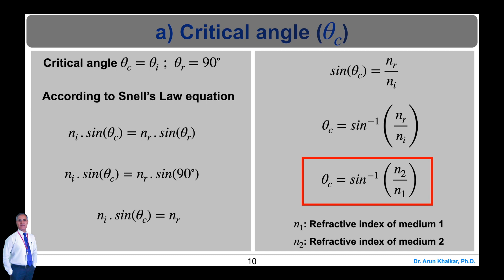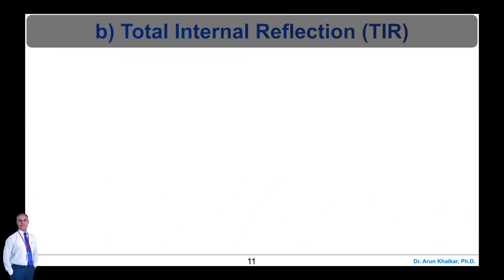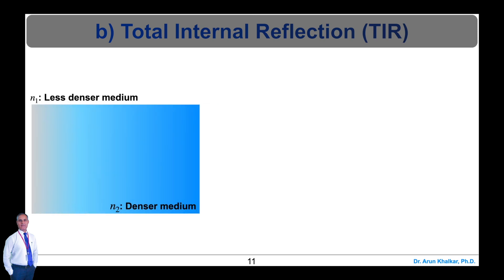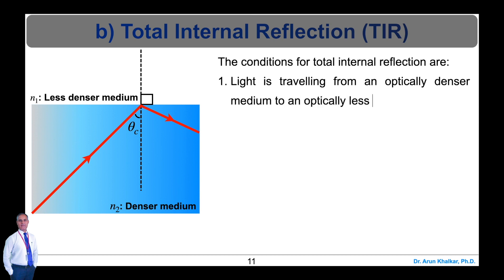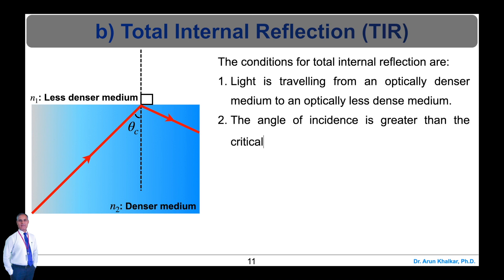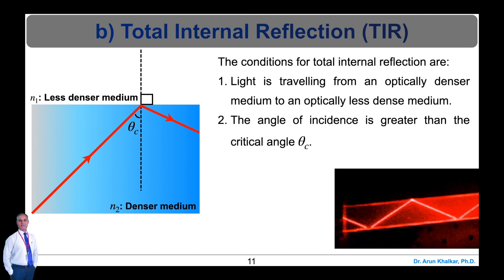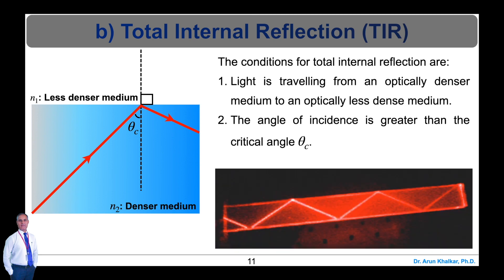The next important parameter of Optic Fibre is total internal reflection, which we have already discussed earlier. When a ray of light passes from a denser medium to a rarer medium and the angle of incidence is greater than the critical angle, the incident light is reflected back into the denser medium. This phenomenon is called total internal reflection. The conditions are: light must travel from an optically denser medium (higher refractive index N1) to an optically less dense medium (lower refractive index N2), and the angle of incidence must be greater than the critical angle theta_c.